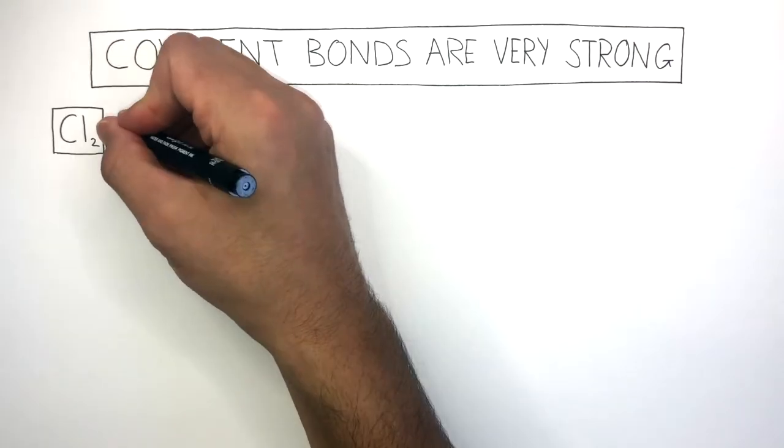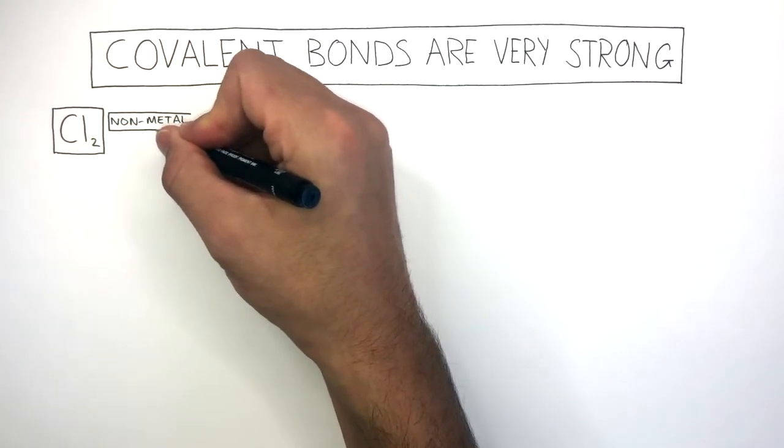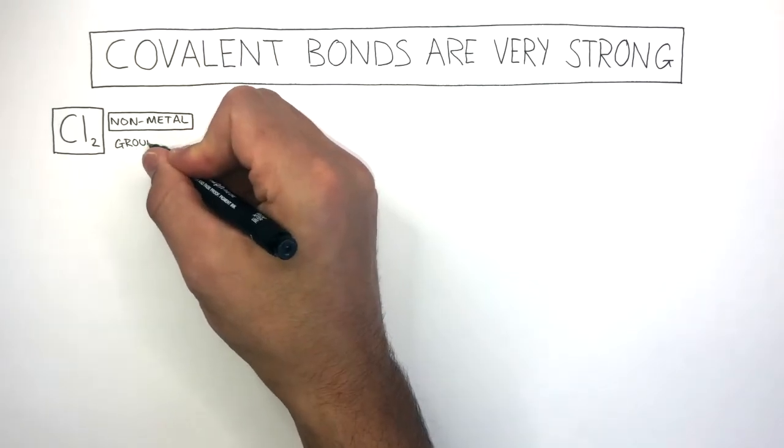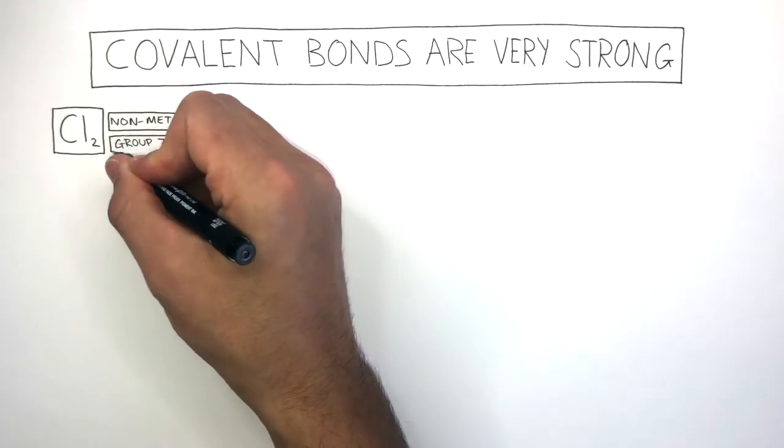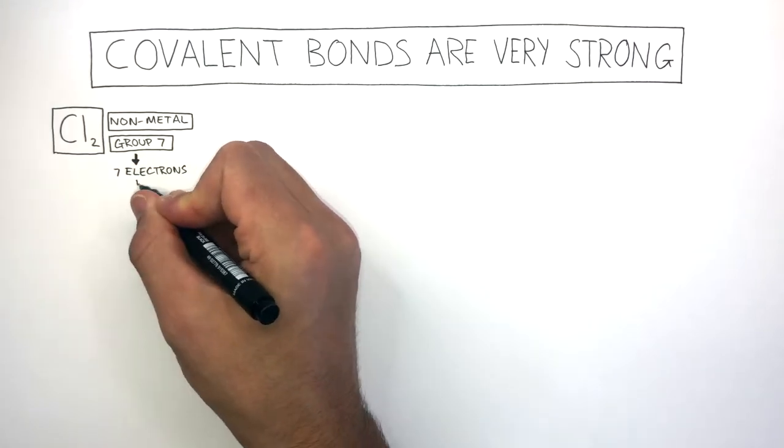Chlorine, or Cl2, is a non-metal, as it contains the element chlorine, which is found in group 7 to the right of the stepped line. Because it's in group 7, it means there are 7 electrons in the outer shell.